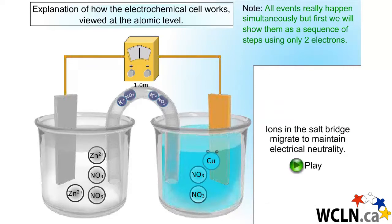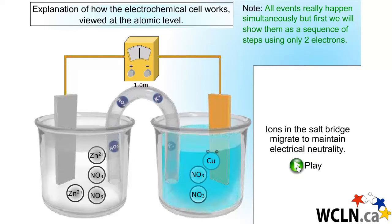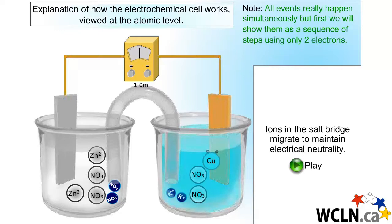The role of the salt bridge is to complete the circuit. Think of it as a simple series circuit — you can't have a gap anywhere in the circuit. The ions in the salt bridge are selected so that no side reactions like precipitation reactions will occur. Potassium nitrate is a good choice.